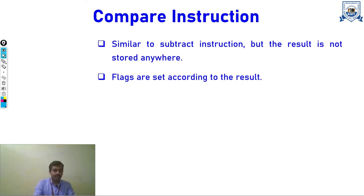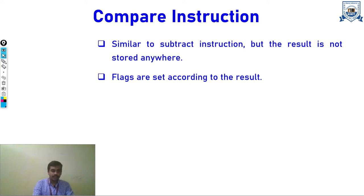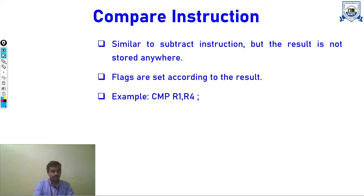Compare instructions are basically similar to subtraction. We have two values to compare, and when we subtract, the result is not stored in the operands — we just check whether the two operands are the same or not. If there is any difference, flags such as carry flag and sign flag are set accordingly. In some processors the command is written as CMP in assembly language. For example, CMP compares R1 with the value stored in R4; if true, the flags are set, otherwise not.